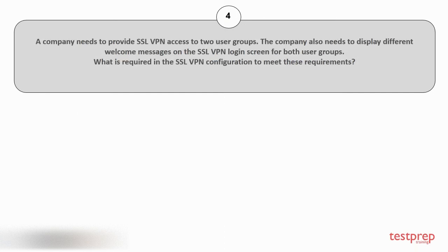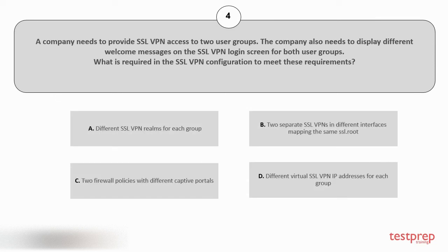Question number 4. A company needs to provide SSL VPN access to two user groups. The company also needs to display different welcome messages on the SSL VPN login screen for both user groups. What is required in the SSL VPN configuration to meet these requirements? Your options are: A) different SSL VPN realms for each group; B) two separate SSL VPNs in different interfaces mapping the same SSL root; C) two firewall policies with different captive portals; D) different virtual SSL VPN IP addresses for each group.